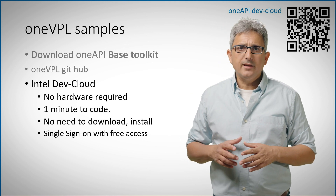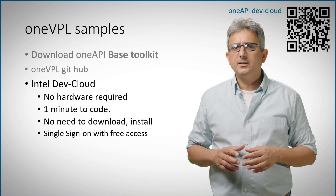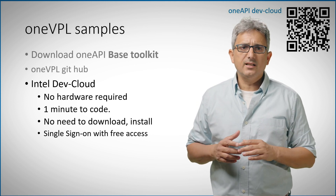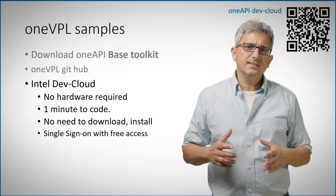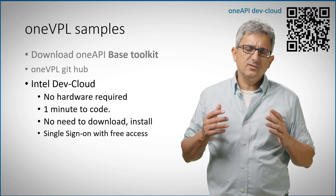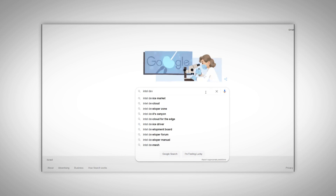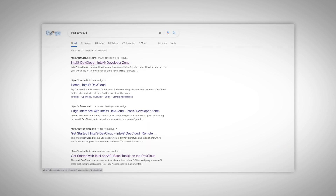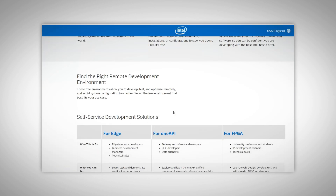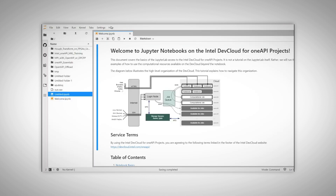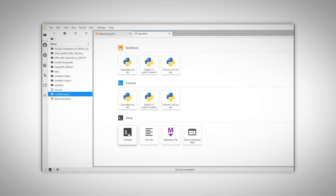Maybe the easiest way, in case you just want to look at the samples or try out new hardware before purchasing it, is using the Intel DevCloud. It really takes minutes to get started with no need to install or download anything. I'll google Intel DevCloud, choose the OneAPI cloud, fill out a few details, and get an email with a connection link which opens a Jupyter notebook with multiple options to get started.